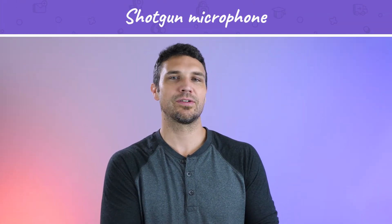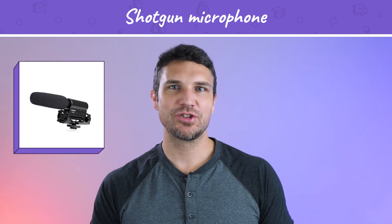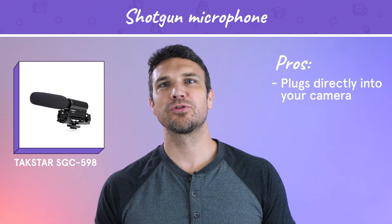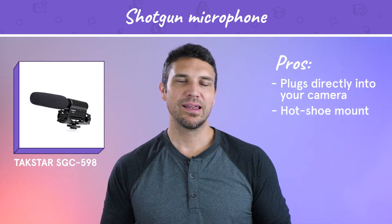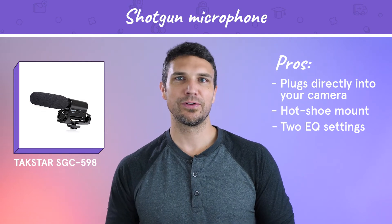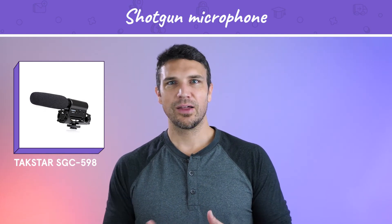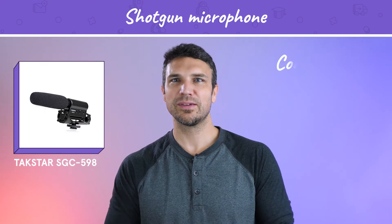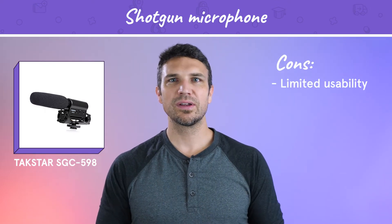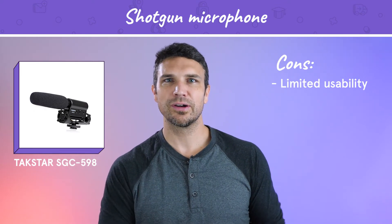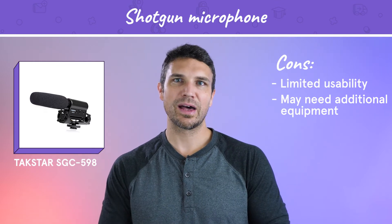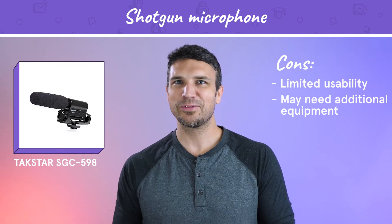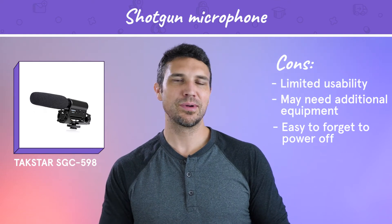If you want your microphone to be invisible, it's best to use a shotgun or lapel mic. On the lower end for shotgun mics is the Takstar SGC-598. This microphone will plug directly into your DSLR and has a hot shoe mount so you can attach it to your camera. It has two EQ settings and comes with a detachable windscreen. On the downside, it's specifically designed to be used with a camera, so if you want to set it up with a mic stand and route the audio to your computer, you have to buy the necessary adapters. Also, it's powered by a single AA battery, and while the battery can last a long time, it's easy to forget to turn it off, which can leave you with a dead microphone.